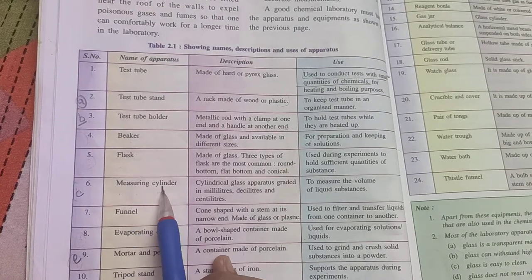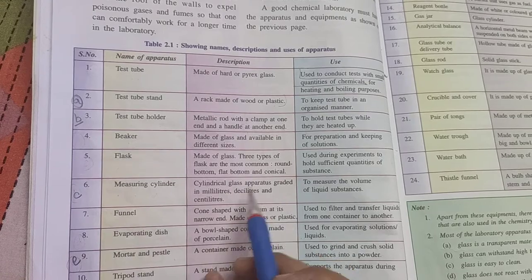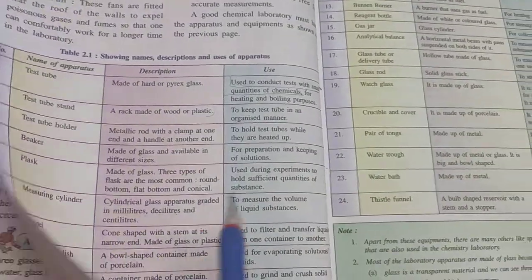Next, we have measuring cylinders. So measuring cylinders: it is a glass apparatus graded in millimeter, decimeter and centimeter.